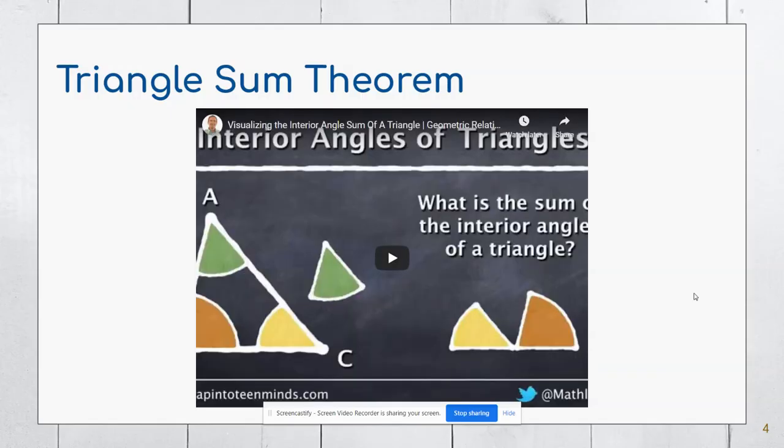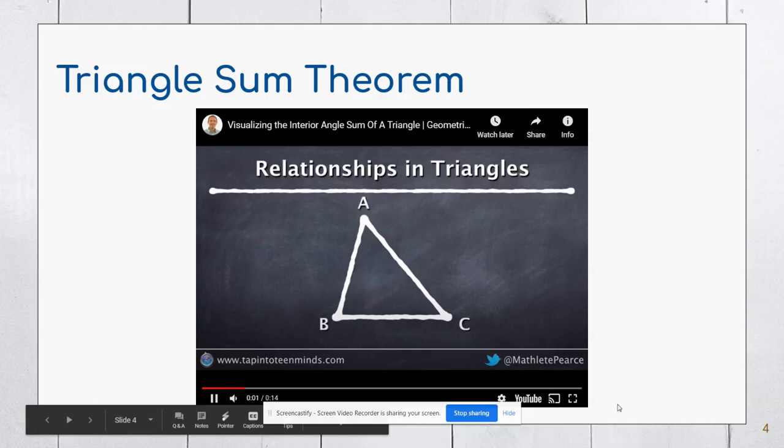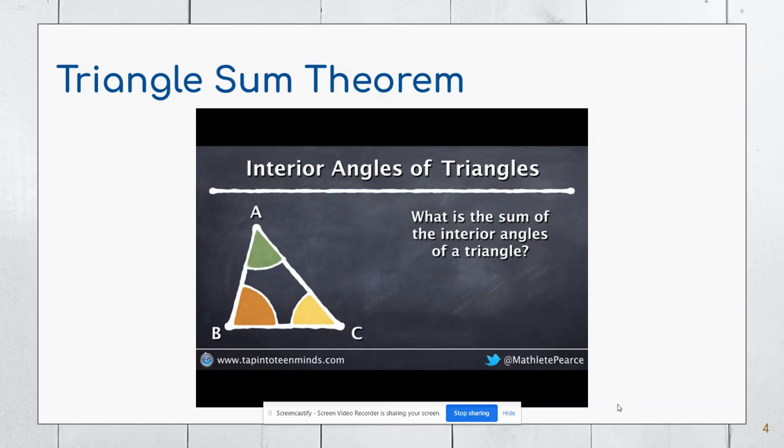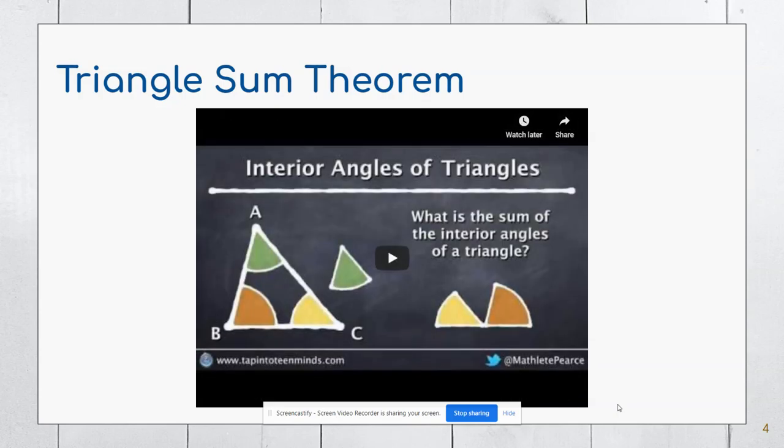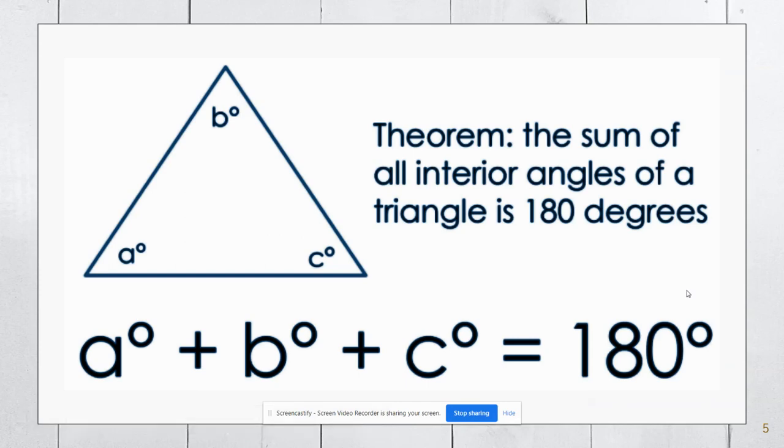The first one is going to be the triangle sum theorem, and I have a little video here from YouTube that's going to show you exactly what's happening. I have angles A, B, and C, and if I put those three angles together, you'll notice that they create a straight line. The interior angle theorem is that if I add all three angles together, I'm going to get 180 degrees.